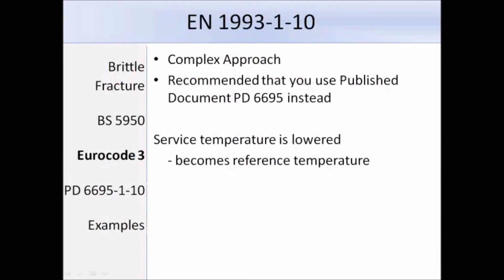That was a brief overview of the method used in the British Standards. Now I'm going to talk about how the Eurocode deals with brittle fracture. In the Eurocodes, the approach is quite complicated. Basically, the surface temperatures are lowered so that they become reference temperatures. Instead of using the Eurocode approach, I would personally recommend that you refer to the published document PD 6695 instead, and I'll talk about that in more detail in a couple of slides.